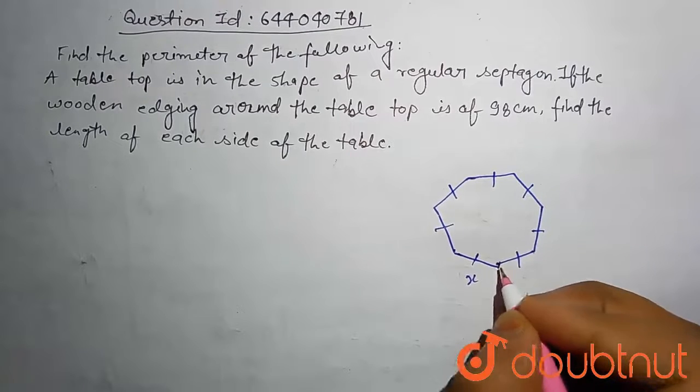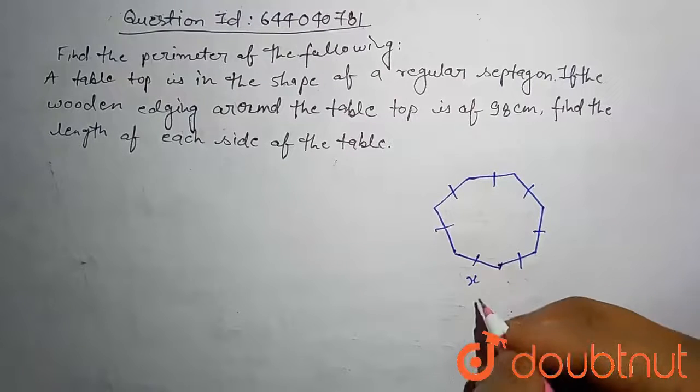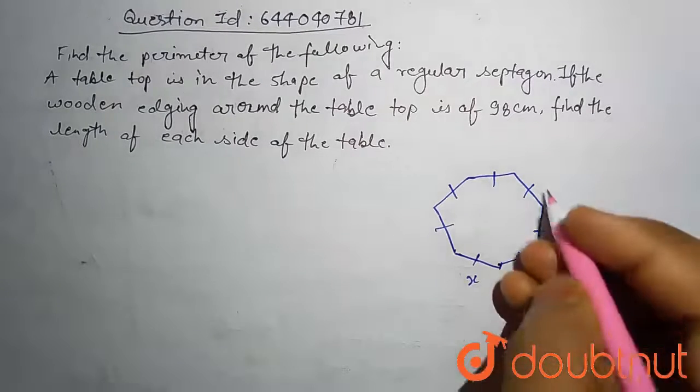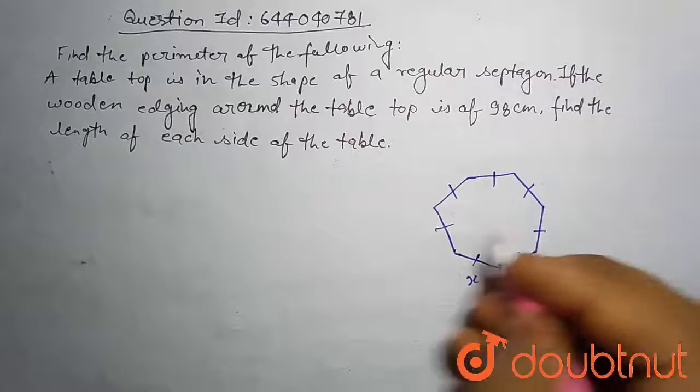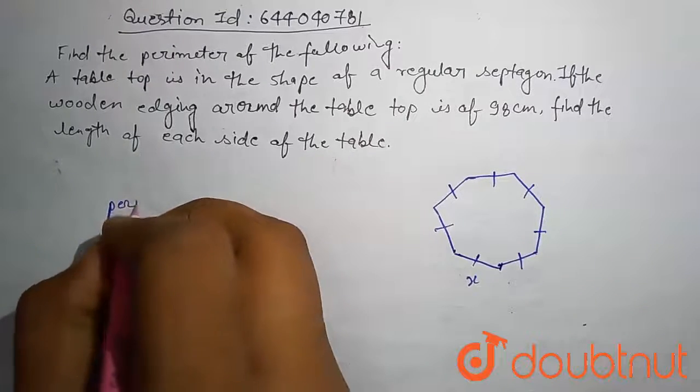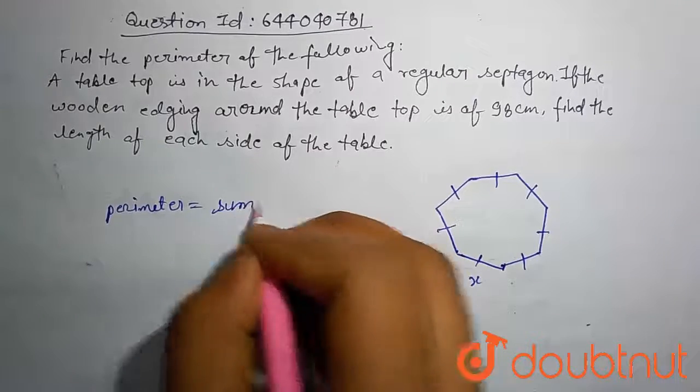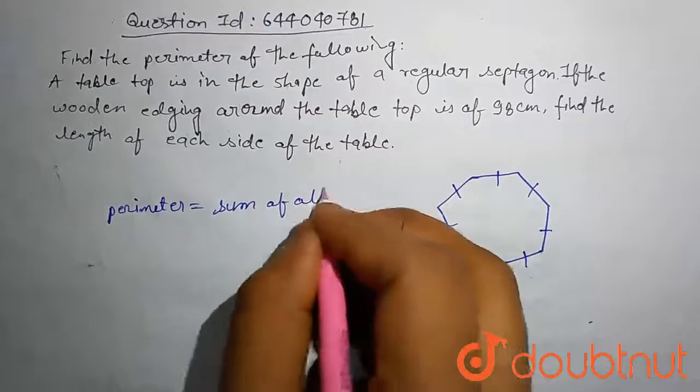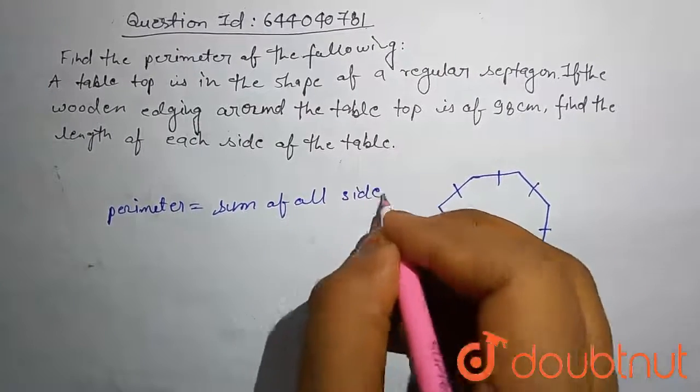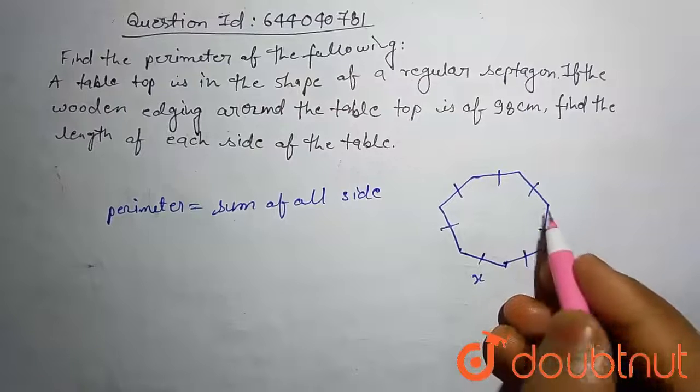If the side of each side of the regular septagon is x, then the perimeter of this regular septagon is: perimeter equals the sum of all sides. Here the total number of sides is 7.